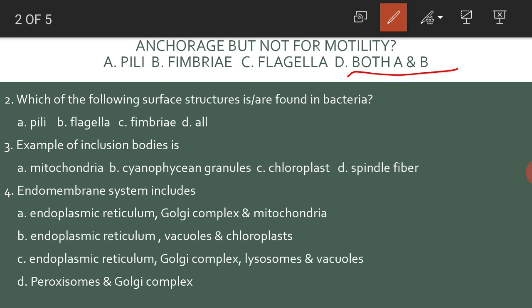Which of the following surface structures is or are found in bacteria? Pili, flagella, fimbriae — all are surface structures. An example of inclusion bodies is cyanophysian granules.